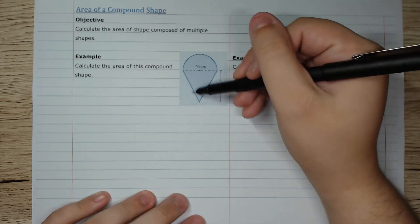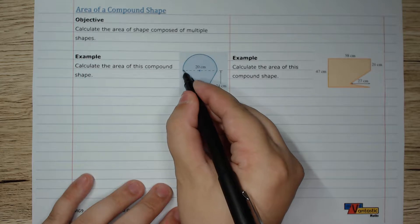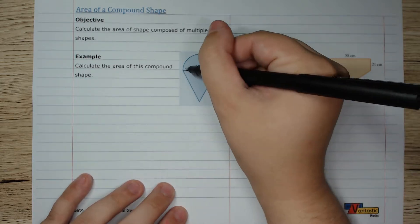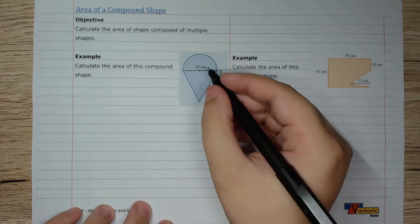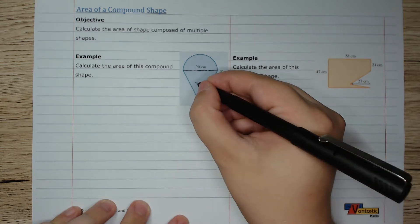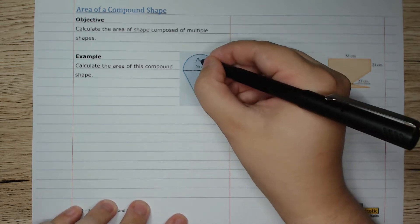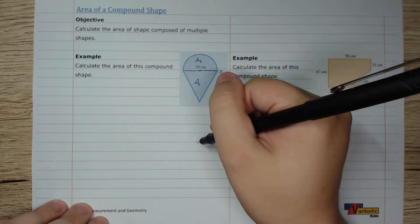For example, this ice cream cone kind of looking shape is made out of a triangle down the bottom and a semicircle on the top. The way we're going to calculate the area of this shape is by breaking it up into the two component shapes, area one and area two, calculating them separately and then adding them up.